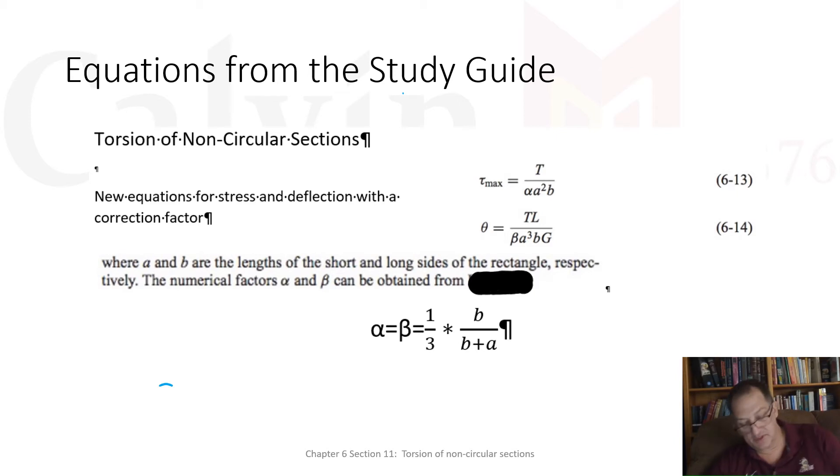I will say this too: the numerical factors alpha and beta can be obtained from a chart. That's what the book says. But I have provided this equation, which is a good approximation for the chart in the book, and it makes it easier to use.